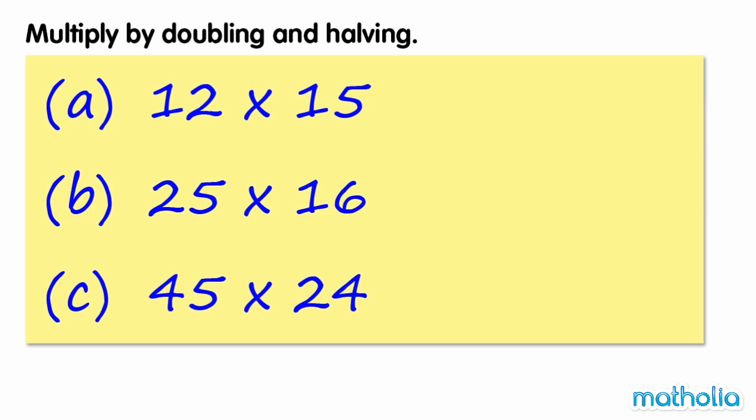Multiply by Doubling and Halving. When multiplying an even number by a multiple of 5, we can find the answer mentally by halving the even number and doubling the multiple of 5.